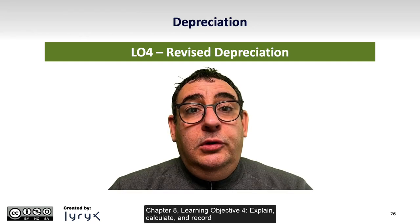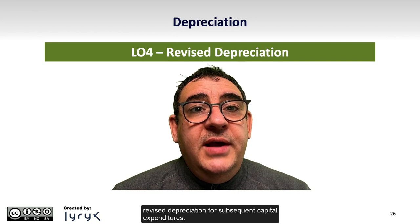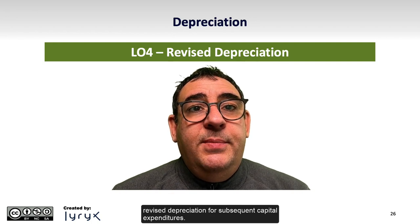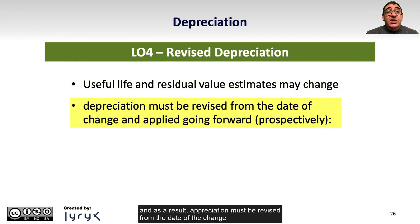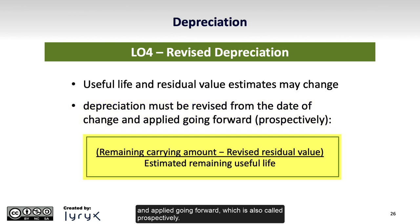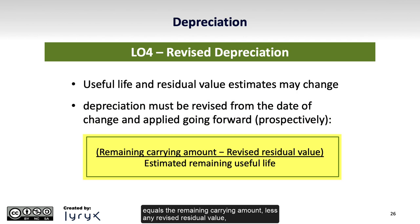Chapter 8 Learning Objective 4: Explain, calculate, and record revised depreciation for subsequent capital expenditures. The useful life and residual value estimates may change, and as a result, depreciation must be revised from the date of the change and applied going forward, which is also called prospectively. This is accomplished by employing the following formula where revised depreciation equals the remaining carrying amount less any revised residual value, divided by the estimated remaining useful life.